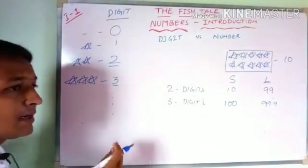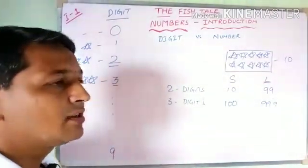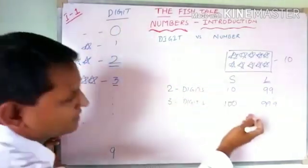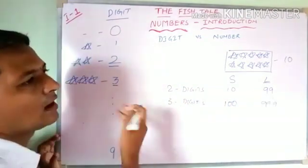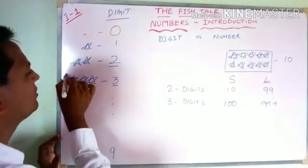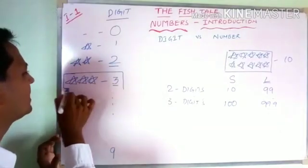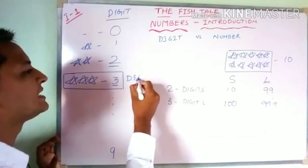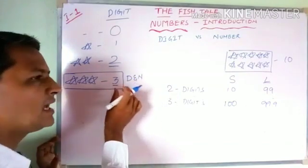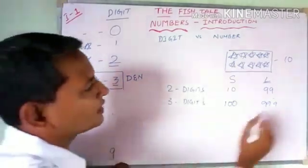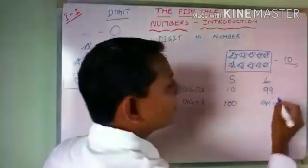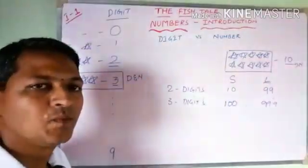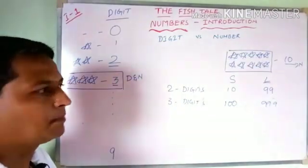All digits are numbers, but all numbers are not digits. For example, 3 is a digit as well as a number — it is a symbol and it represents a quantity. But 10 is not a digit; it is only a number. 10 is not a digit — it is only a number, made up of two digits.